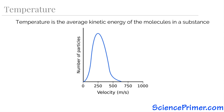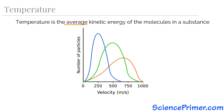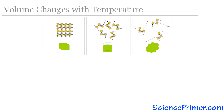Likewise, if we were to slow down the molecules, reducing the kinetic energy, this lowering of the average kinetic energy of the molecules results in a decrease in temperature. The word 'average' in this definition is important. Molecules in an object are not all moving at exactly the same speed. At all temperatures, there are molecules moving at different speeds. The change in temperature results from a change in the average speed of the entire group of molecules. And while gases change volume with temperature more than other phases, solids and liquids also change volume with changes in temperature.